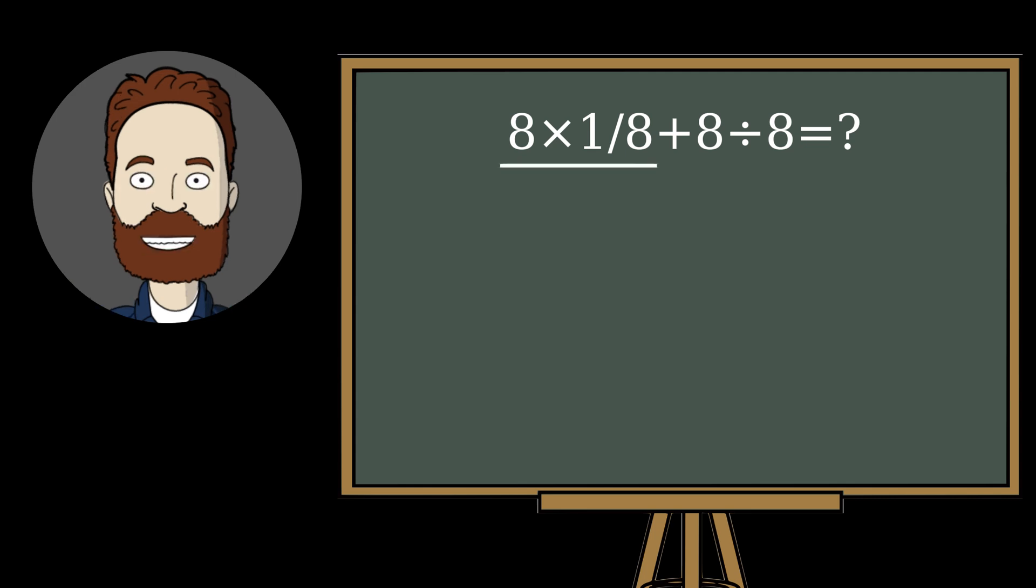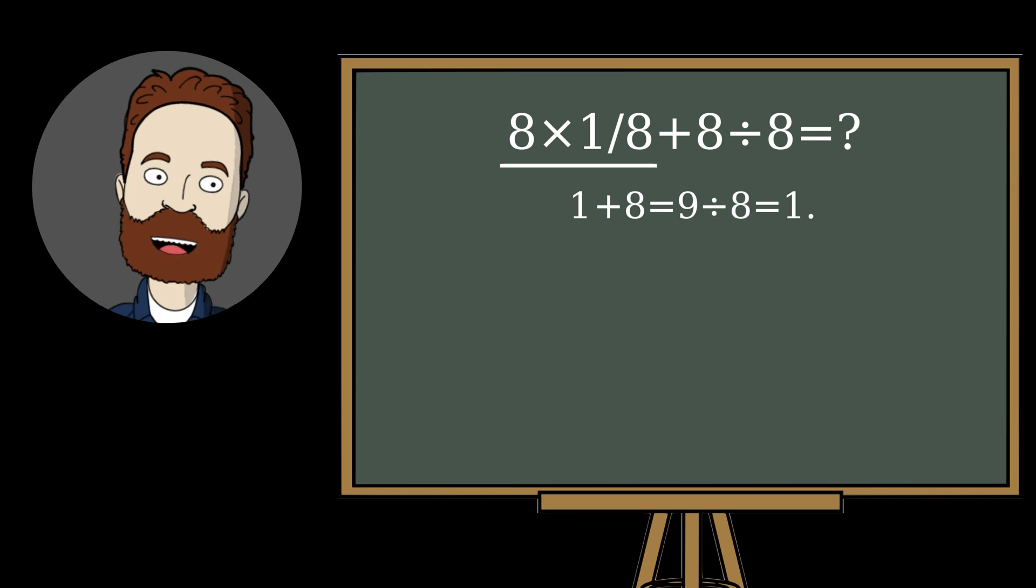First they calculate 8 times 1/8, that's 1, then they add the next 8 to this result, getting 9, and at the end they divide 9 by 8 and get the result.